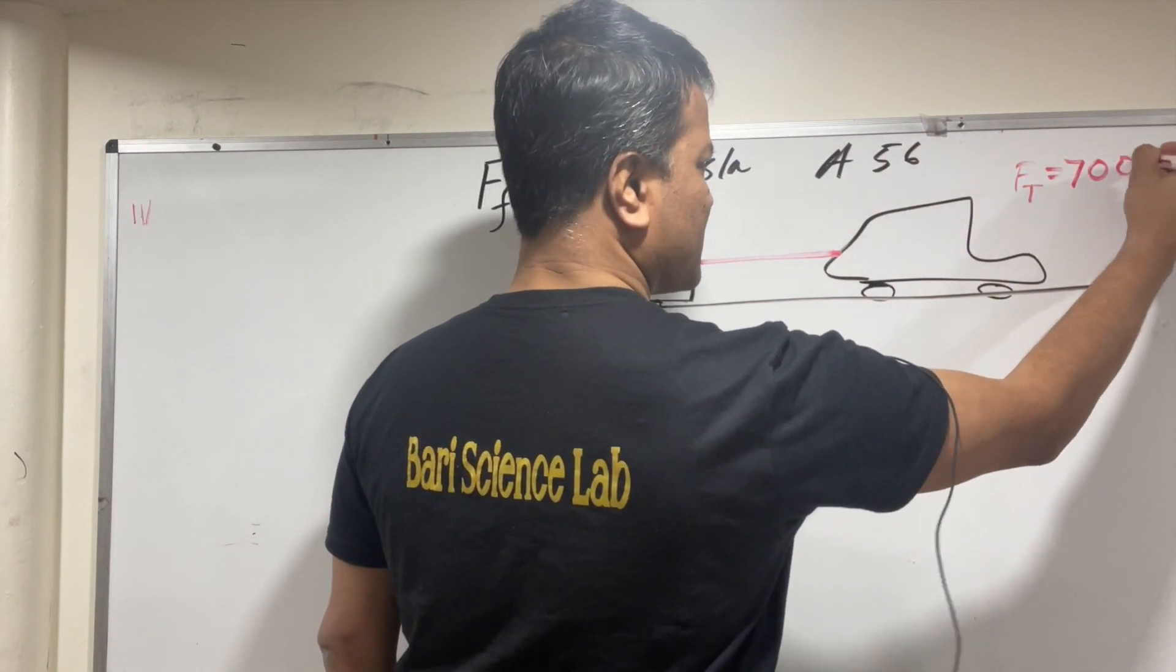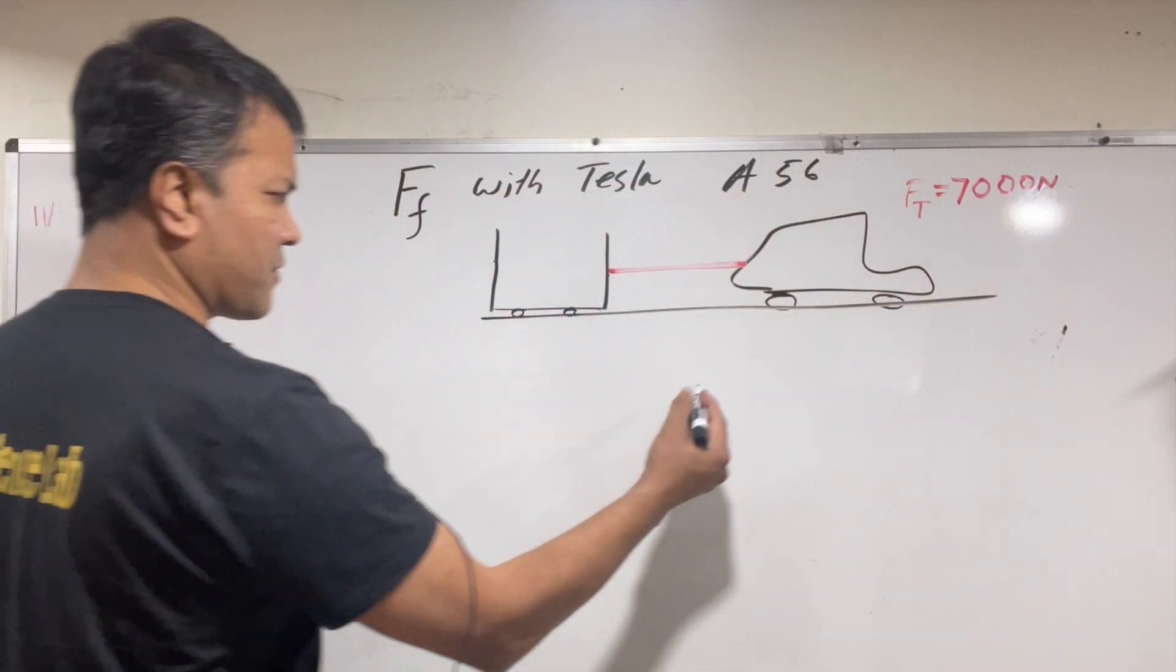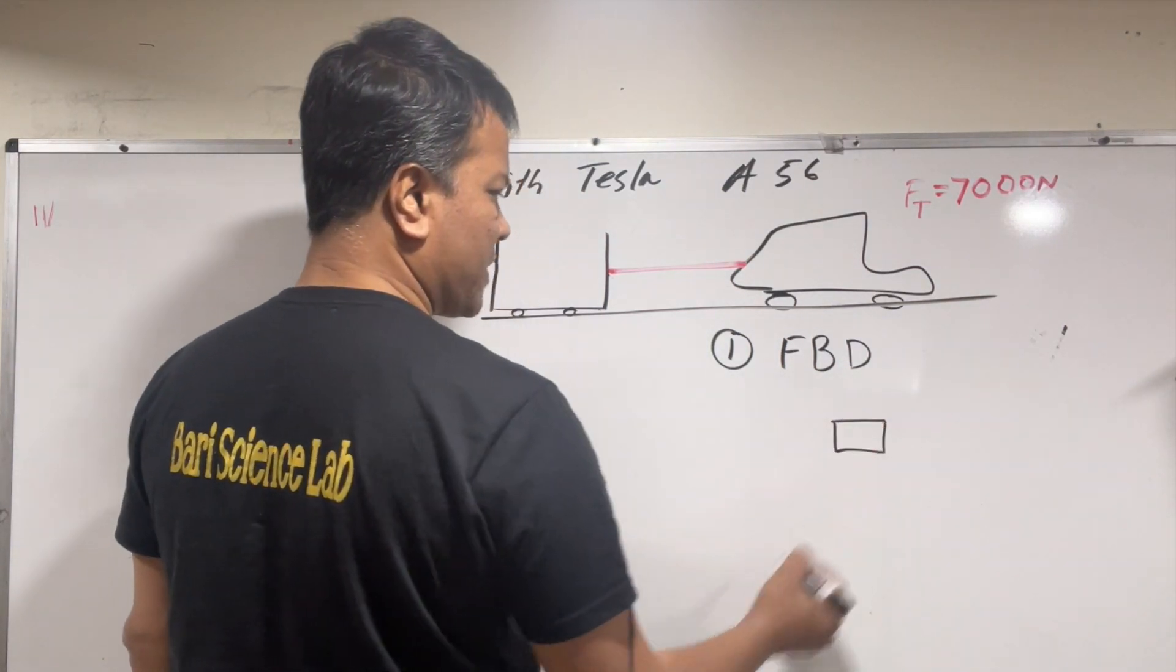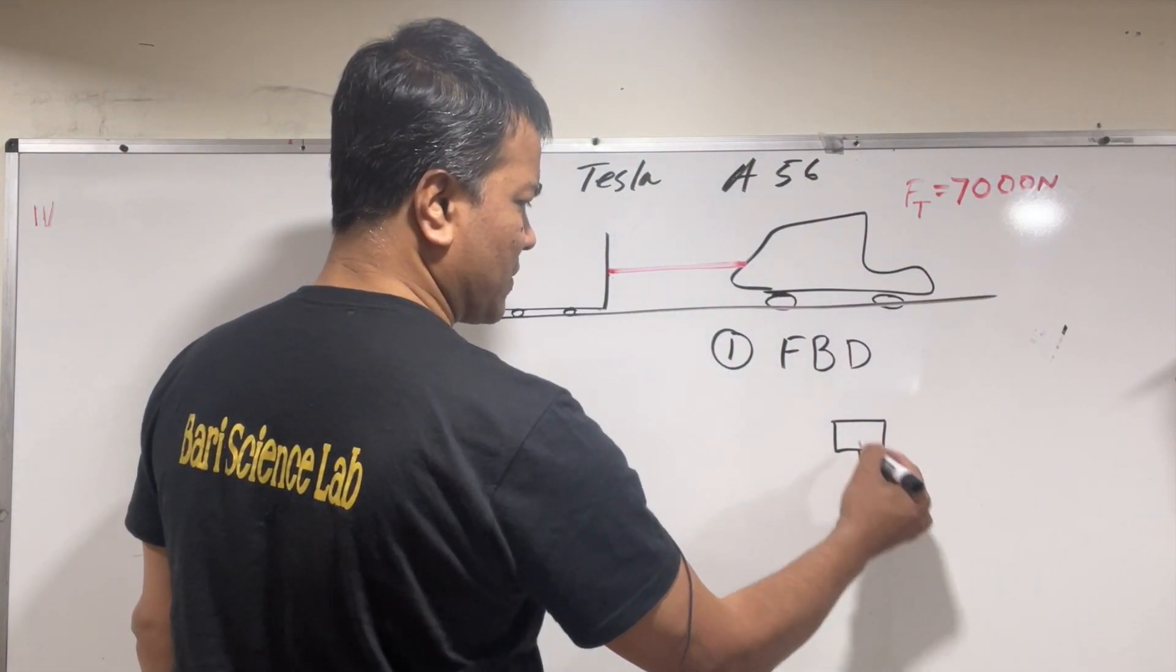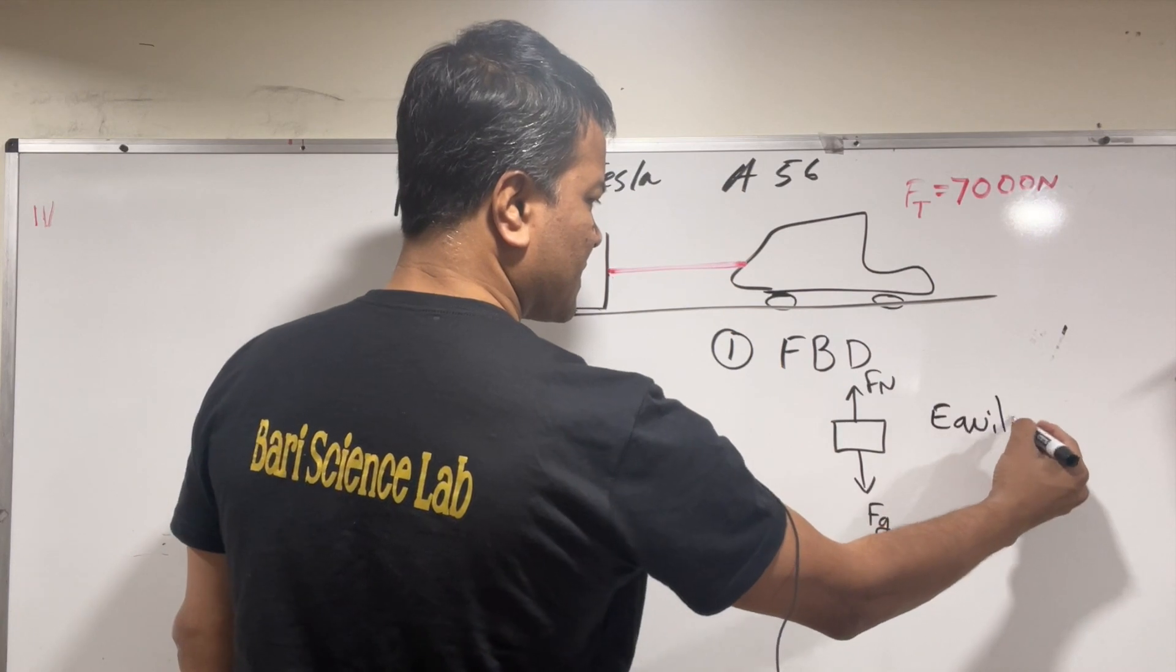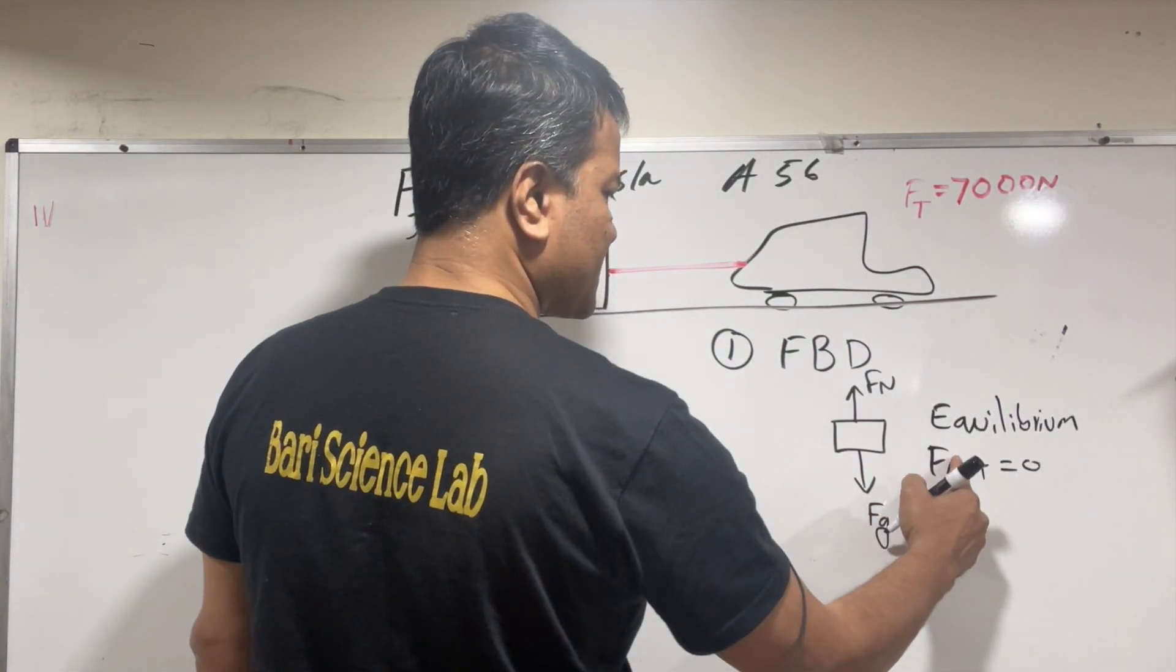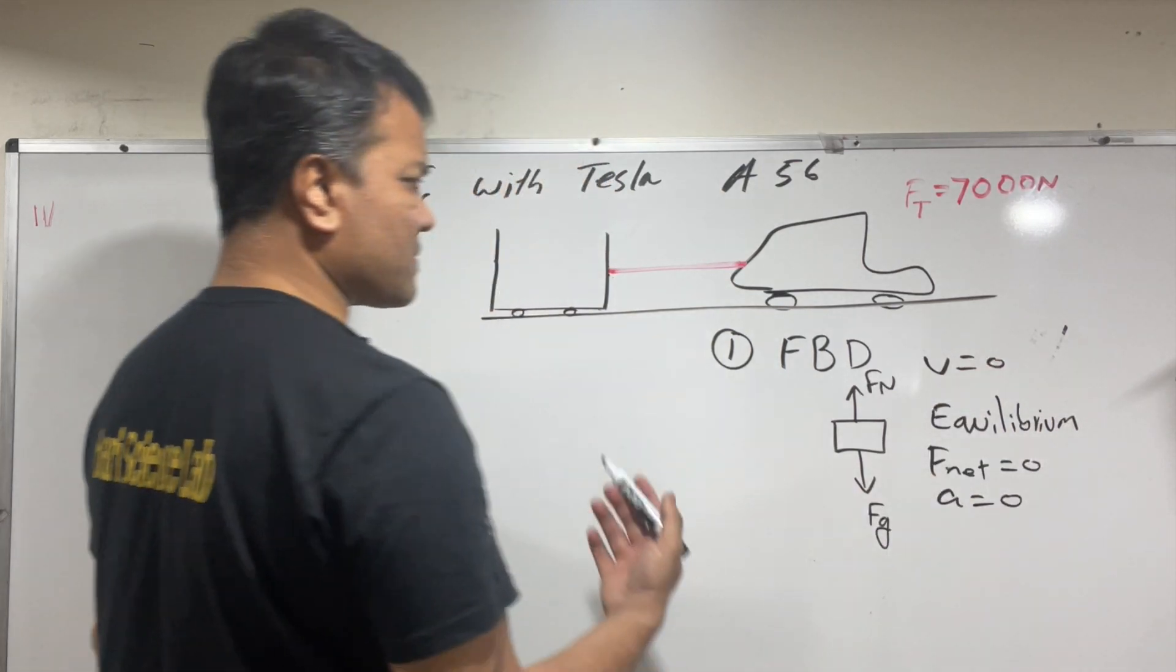Tesla is pulling the car to the east direction, but right now for problem number one, Tesla is at rest. So we want to do the free body diagram. How many forces are acting on it? Well, there are actually two forces acting on it: one is Fg and one is Fn, and the object is in equilibrium. Why is that? Because the net force is zero, because acceleration is zero and velocity is zero.